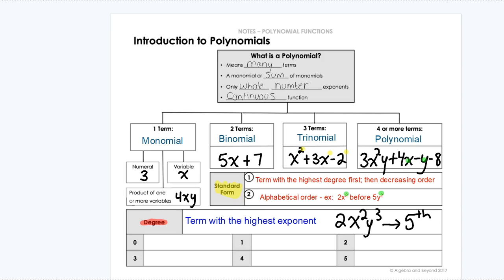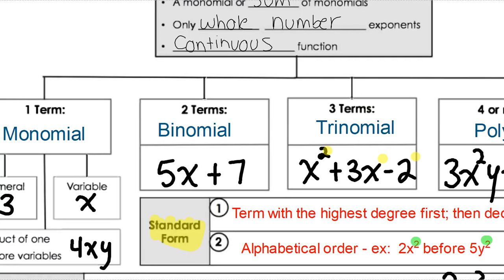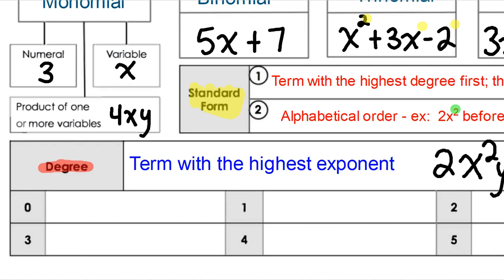Based on the degree, we give these names. If the highest exponent is 0 — in other words it has no variable attached to it, that would be just a number, like 5 — when it's just a number, we call it a constant. A constant is just a number, it has no variable with any exponent.